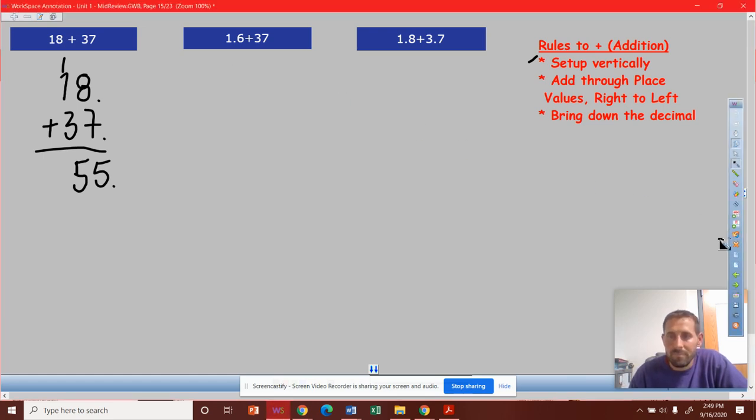So we have 1.6 plus, we're going to do 37. Sorry, this pen doesn't always work the way it should.